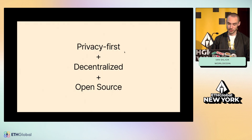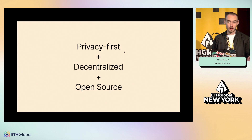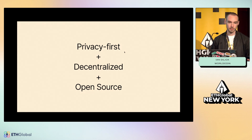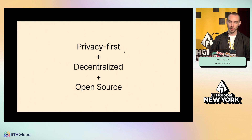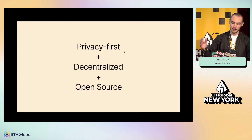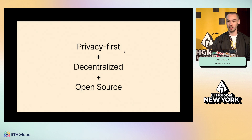World ID is designed to be privacy-first, decentralized, and open-source. We don't ask your name, your email, your address, your ID — anything like that. We ask your phone number, but that's optional. It is decentralizing — we have the WorldCoin Foundation that stewards this protocol. Right now, the Orb is the one device you can use for verifying at the highest level with World ID, but we are exploring other verification methods, and those may even come from other companies. And it's open-source — all of our smart contracts, our sign-up sequencer, everything like that is on GitHub. You can go deploy your own if you'd like.